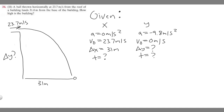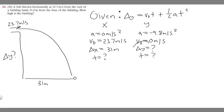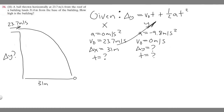When solving two-dimensional kinematic problems, we almost always use the equation: delta y equals v-sub-zero times t plus one-half times a times t-squared. To find delta y, we need time first. Since the time for the ball to travel horizontally and vertically is the same, we can solve for time using the x-direction variables and then plug it into the y equation.